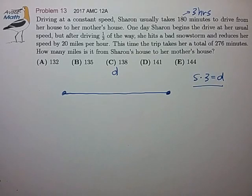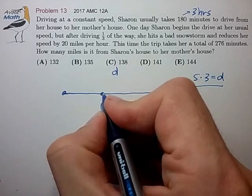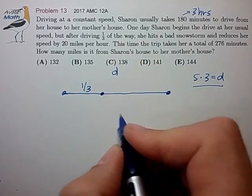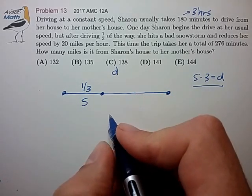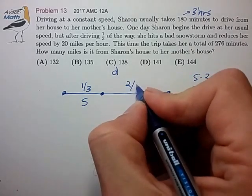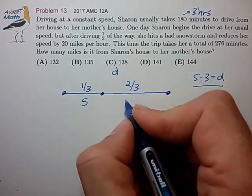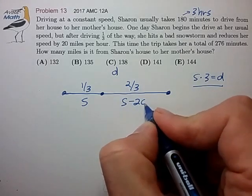Now, on the bad day, it looks like she gets one-third of the way there at speed S, and then the remainder of the trip, two-thirds of the way, she has to do at speed S minus 20.